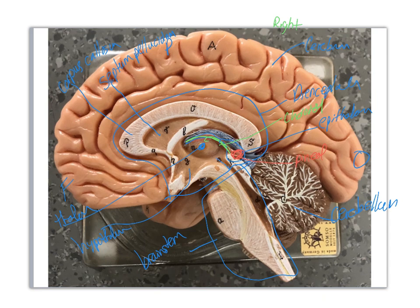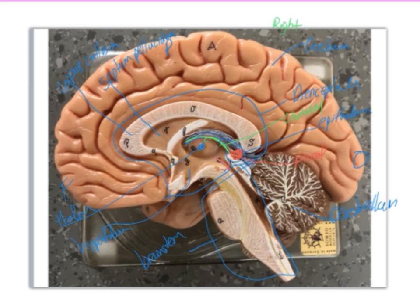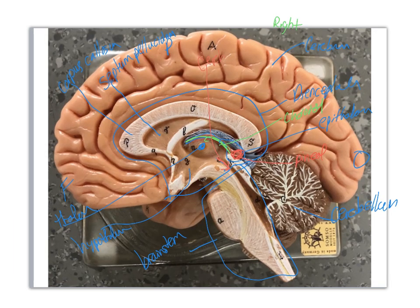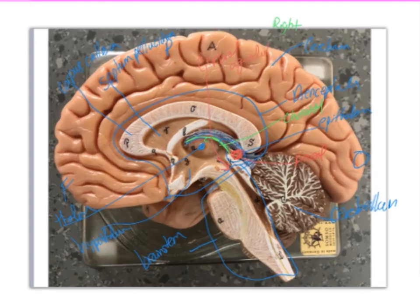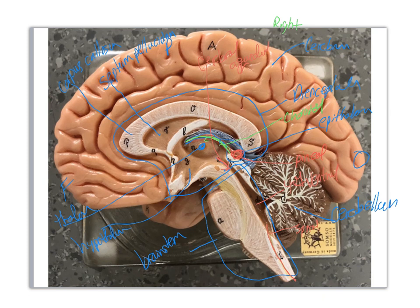Coming down here, that is going to be your cerebral aqueduct. And then here, that's going to be your fourth ventricle. And then down in here, that is your spinal canal. Now right here, that is the superior colliculus of your corpora quadrigemina. That is the inferior colliculus. The cerebral peduncle is going to be over here.